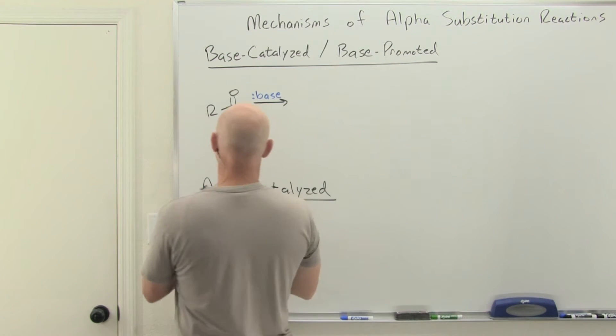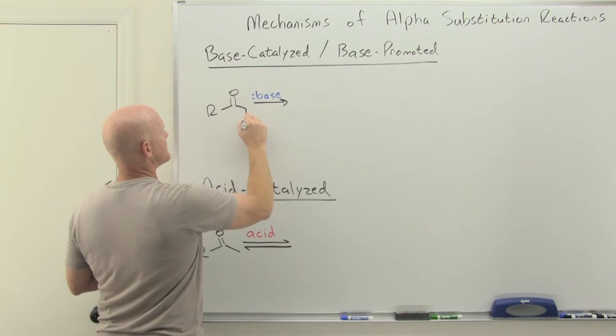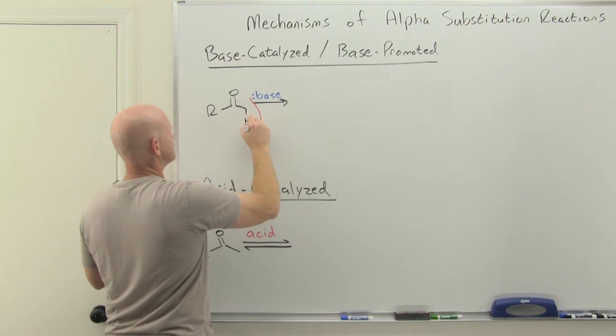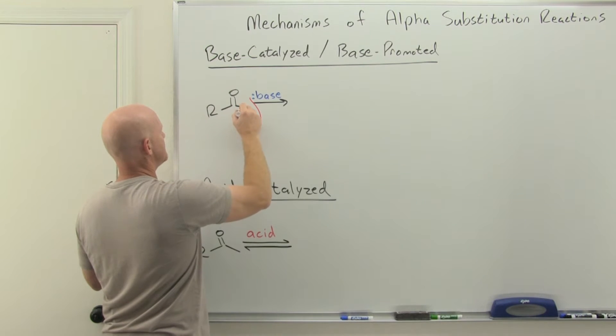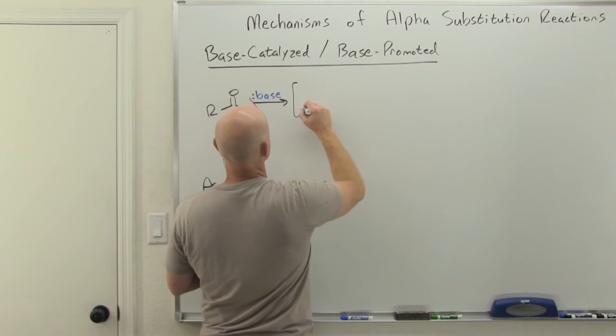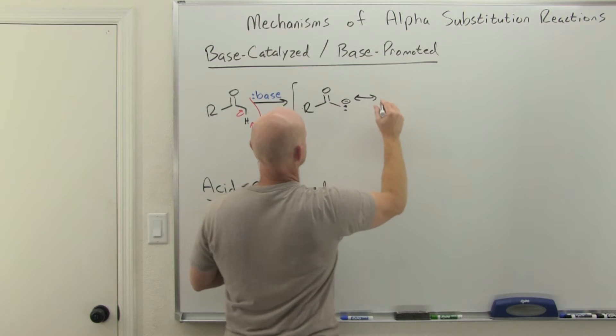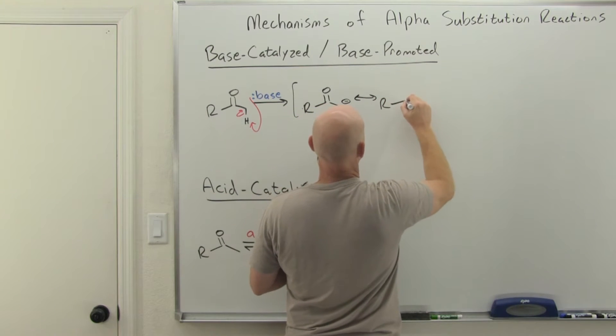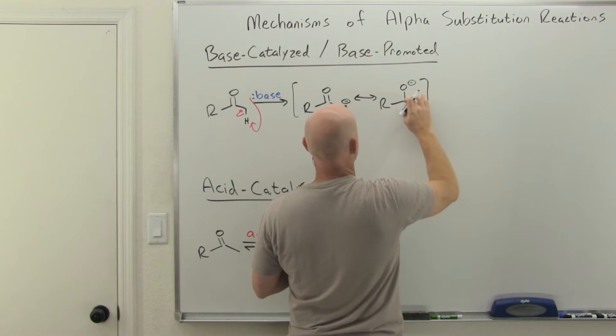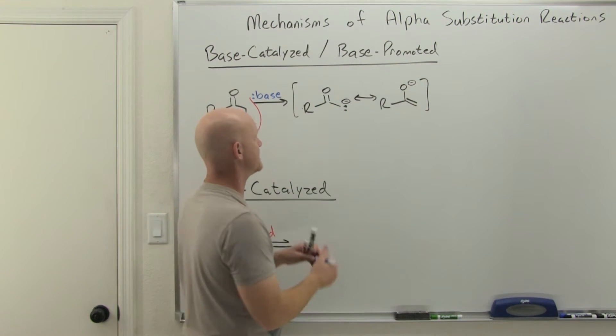If we take a look first at this base-catalyzed mechanism, first you're just going to deprotonate an alpha hydrogen. In this case, we're just going to come in here and deprotonate that hydrogen and form our enolate. Let's draw that a little cleaner. So there's our enolate there.